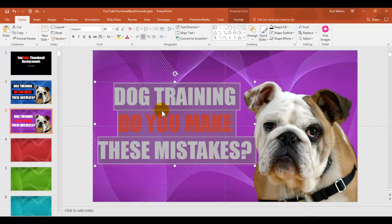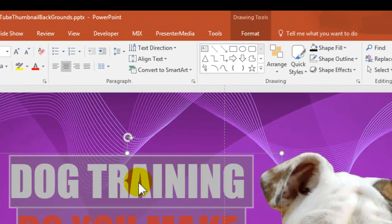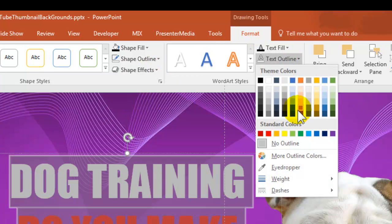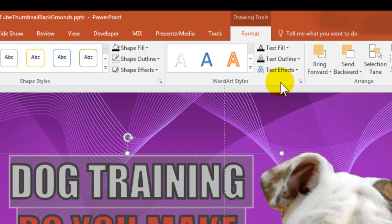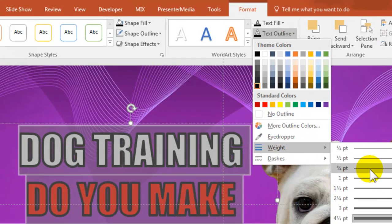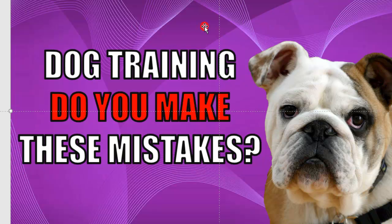You probably want to use a text outline. So just come up to Format and you'll see Text Outline. I'm going to choose black, then go back up to Text Outline and choose the weight — you want a pretty good weight. Having this outline makes your text a lot easier to read.